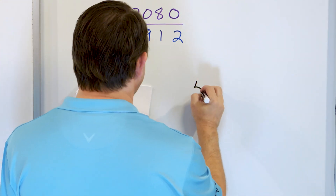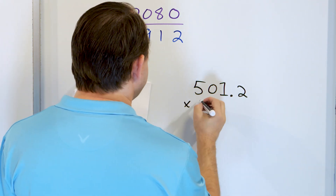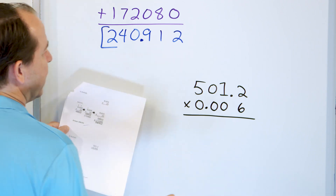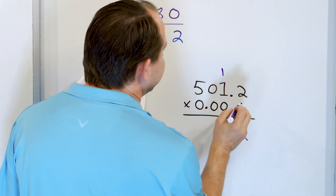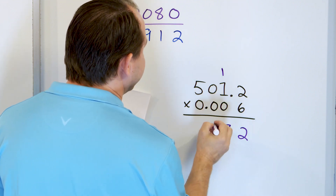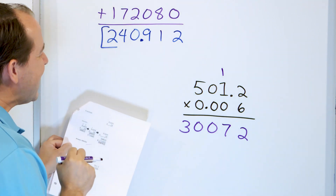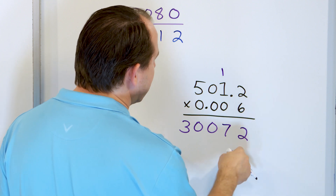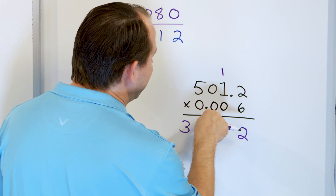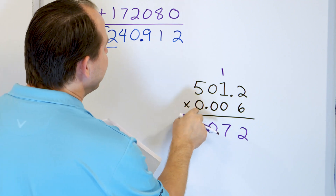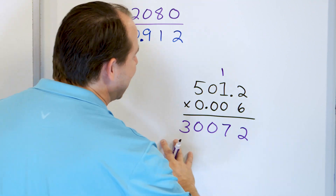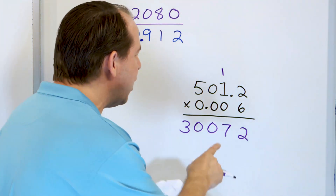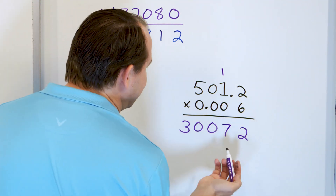Let's take a look at 501.2 multiplied by 0.006. Notice the decimal points are not lined up — the numbers are lined up in the columns. Multiply: 6 times 2 is 12, carry. 6 times 1 is 6, plus 1 more is 7. 6 times 0 is 0. 6 times 5 is 30. Now, here's a little secret with multiplying decimals: notice it's 0.006. The next digits we would multiply by are both 0s, so they produce all zeros. When you see leading zeros like that, you don't really have to multiply them — you know they're all going to produce zeros, and you'll just add back these same numbers we already have.